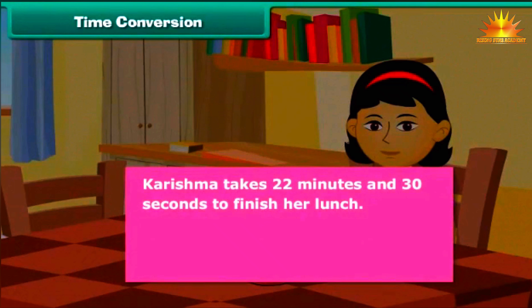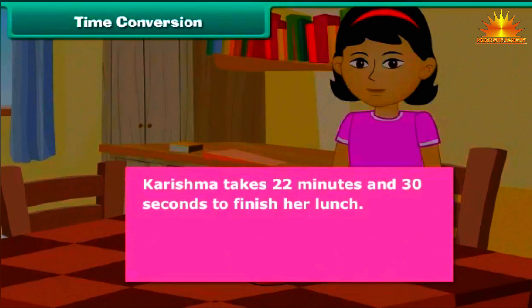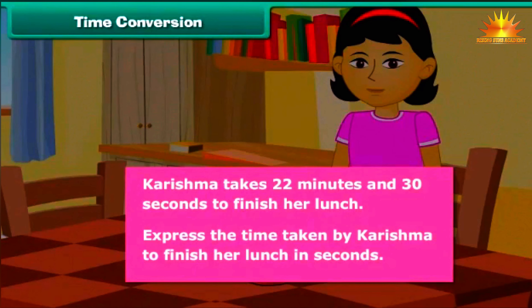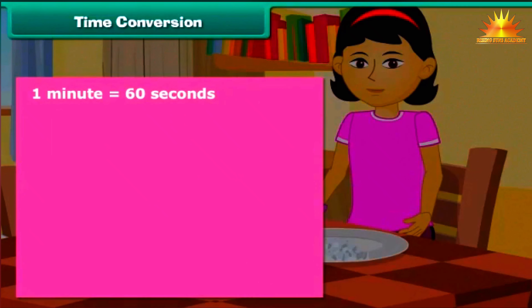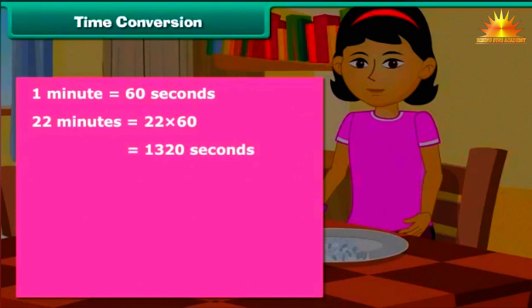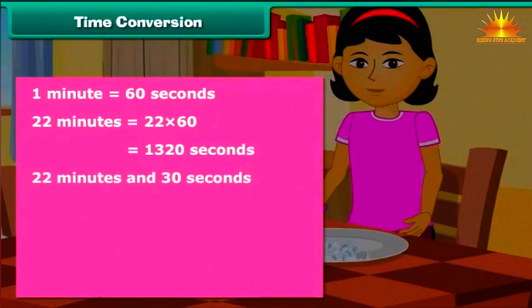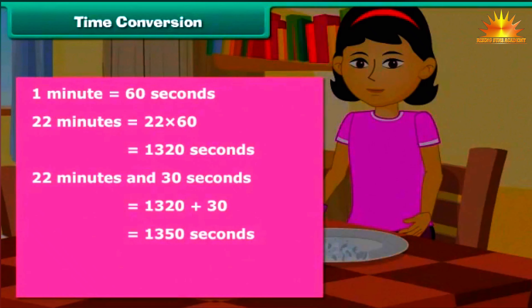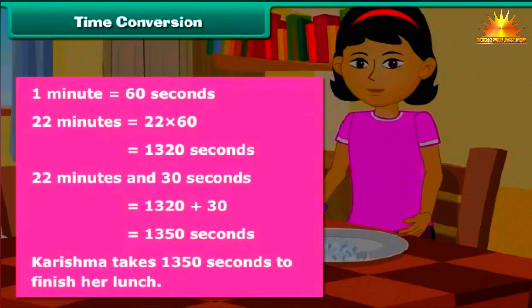Karishma takes 22 minutes and 30 seconds to finish her lunch. Express the time taken in seconds. 1 minute equals 60 seconds. 22 minutes equals 22 into 60, which equals 1320 seconds. 22 minutes and 30 seconds equals 1320 plus 30, which equals 1350 seconds. Karishma takes 1350 seconds to finish her lunch.